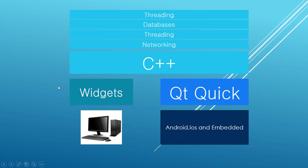Today we have two technologies to write graphical user interfaces using Qt. We have Qt Widgets, which are an older technology mainly targeting desktop platforms. And we have Qt Quick, which can be used to design dynamic and fluid user interfaces for Android, iOS and embedded. But make no mistake — Qt Quick applications can also run on desktop.